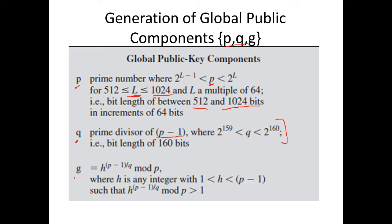The third global public key component is G, computed as H^((P-1)/Q) mod P, where H is any integer between 1 and P minus 1. An important condition is that H^((P-1)/Q) mod P must be greater than 1; otherwise, a new value for H must be selected. These three steps give us the global public components P, Q, G.